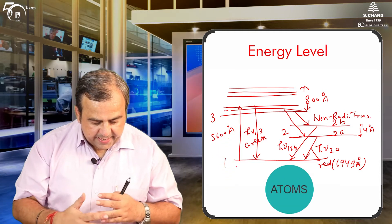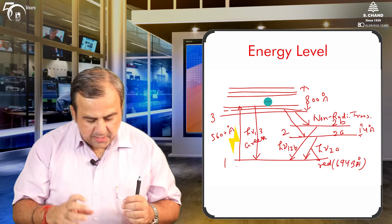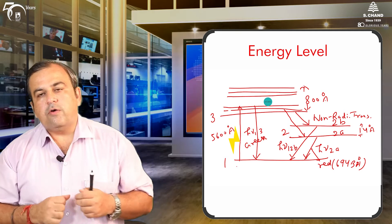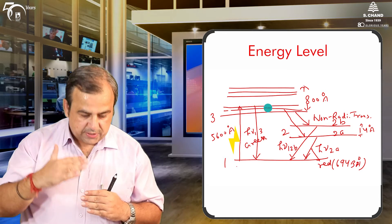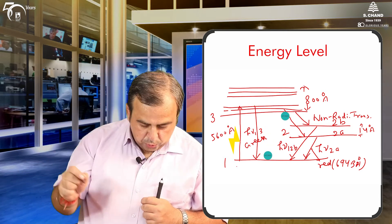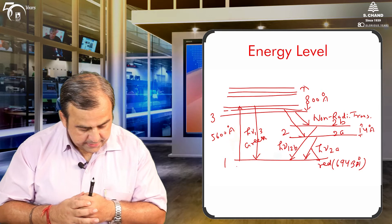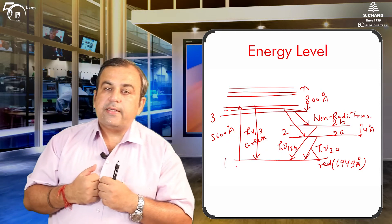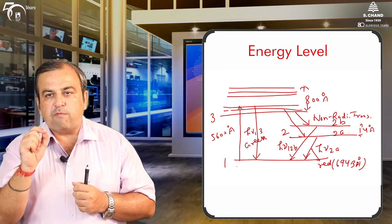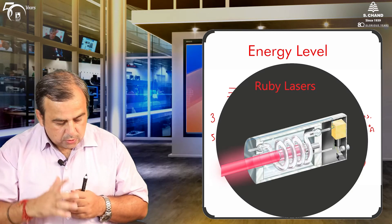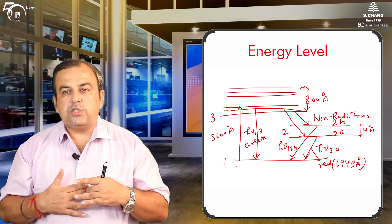From energy level three, some excited atoms return to ground state one, while others move to level two. The probability of transition from three to two is much higher than from three to one. As a result, level two becomes more populated than one — the condition of population inversion is achieved, which was our target to achieve lasing action.